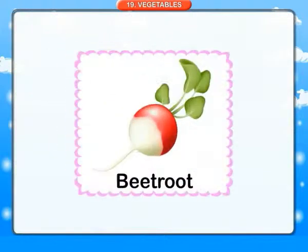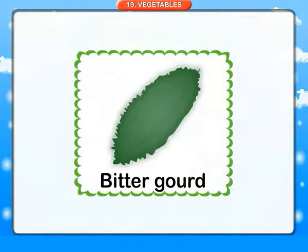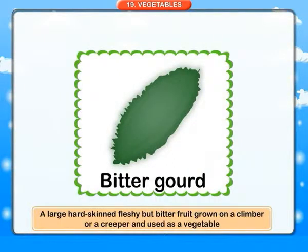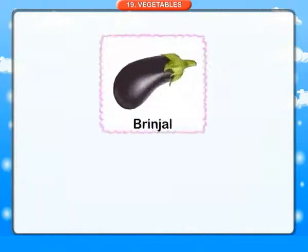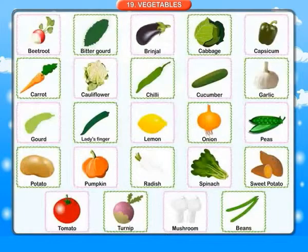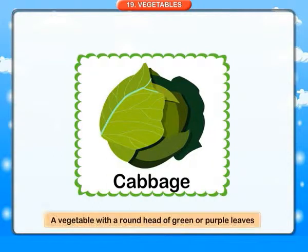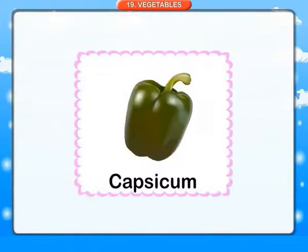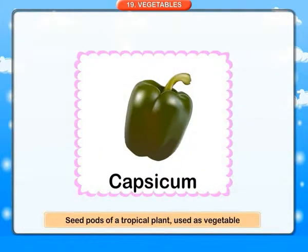Vegetables. Beetroot: a plant with an edible root. Bitter gourd: a large hard-skinned, fleshy but bitter fruit grown on a climber or creeper, used as a vegetable. Brinjal: a large almost egg-shaped dark purple fruit used as a vegetable. Cabbage: a vegetable with a round head of green or purple leaves. Capsicum: seed pods of a tropical plant used as a vegetable.